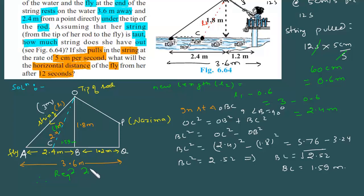The horizontal distance CQ is equal to BC plus BQ. BC is 1.59 plus BQ which is given as 1.2. The sum is 2.79 meters. So the new horizontal distance between the fly and Najima after 12 seconds when she pulls the string is 2.79 meters.